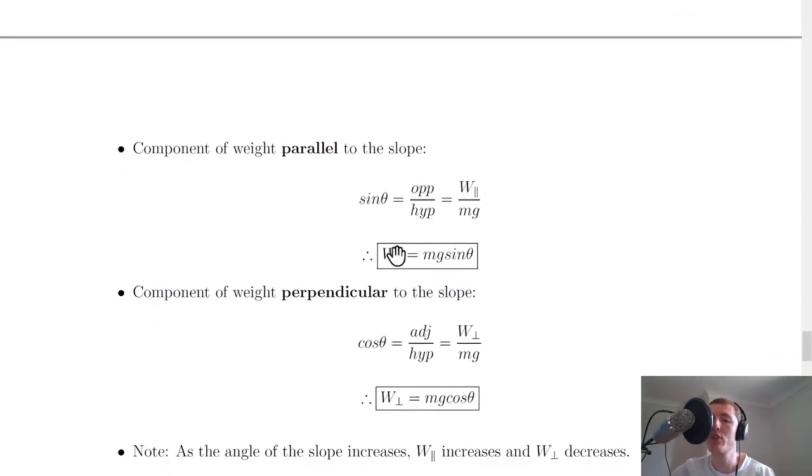We can rearrange this to get an expression for our parallel force. You'll see it's W with two little parallel lines meaning parallel. The parallel component of the weight equals mg sin θ through cross multiplication.